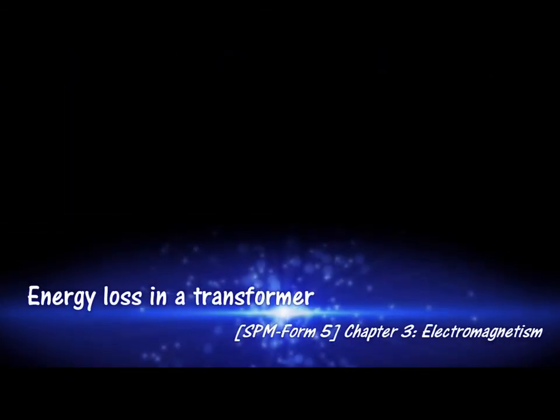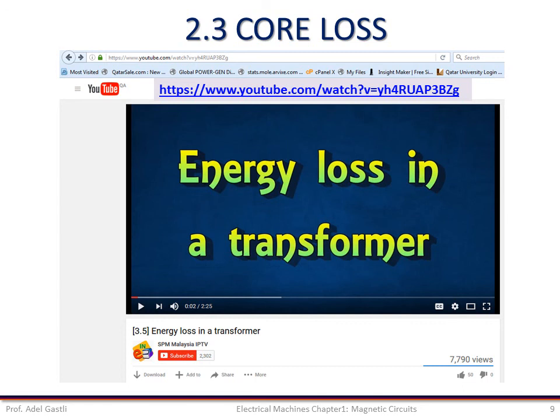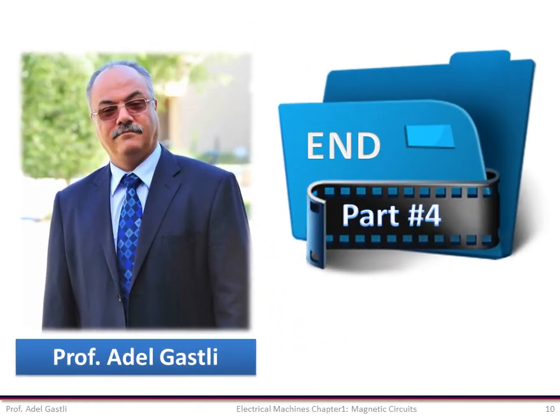In addition to core loss — which includes the hysteresis loss caused by magnetization and demagnetization of the core, and eddy current losses caused by time-varying flux — this movie has presented other electrical losses that will be explained further in the chapter on transformers. This is the end of this part. Thank you for watching.